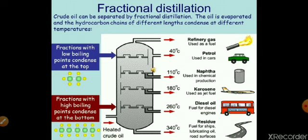Petroleum ether is used as a solvent and in dry cleaning. Petrol is used as automobile fuel. Naphtha is used as a solvent. Kerosene is used as domestic fuel, jet fuel, and illuminant. Diesel is used as diesel engine fuel. Heavy oil is further vacuum distilled to obtain lubricating oil, Vaseline, grease, and paraffin wax. The solid residue contains asphalt and petroleum coke.